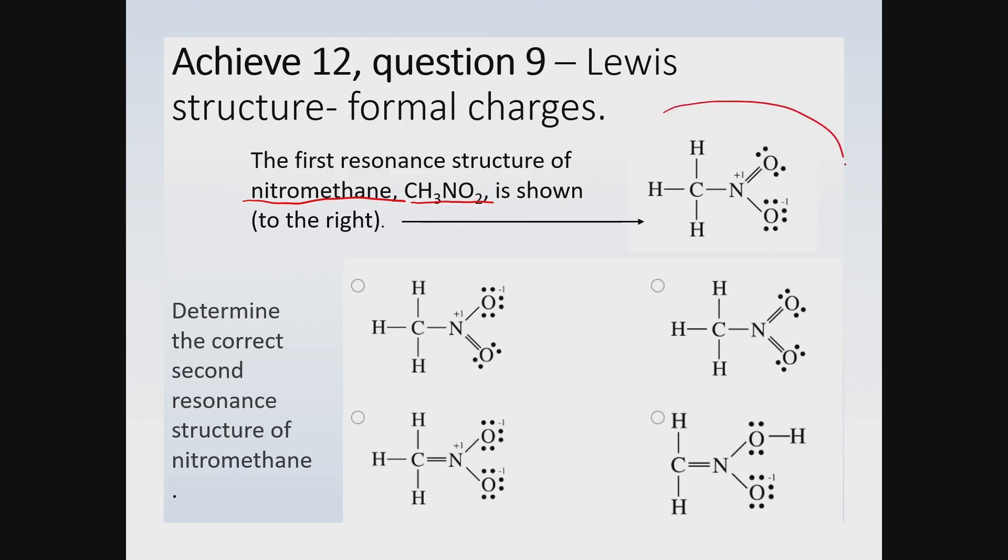This is the Lewis structure, and what you have to do is figure out of these four choices which is the correctly drawn resonance form of the structure. Let me give you a couple of hints on how to solve this problem. One thing that you can immediately look for is if the atoms have octets. Let me take a moment to explain that.